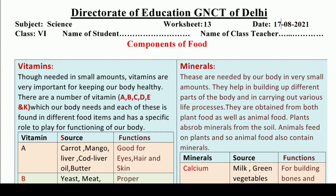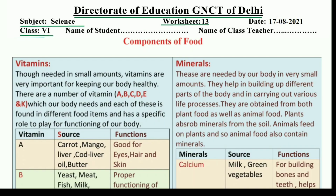Hello and welcome to Lavneesh Sarki class. This is Direct Rate of Education GNCT of Delhi's worksheet, worksheet number 13, and it is only for class 6 students. It has been taken from the subject Science and we will understand the topic components of food. We have discussed other components of food in last worksheets — carbohydrates, protein, fat — and now we will discuss vitamins and minerals in this worksheet. So let's start with vitamins.